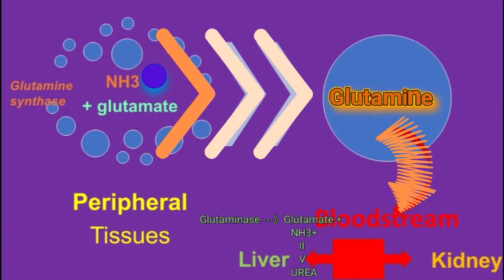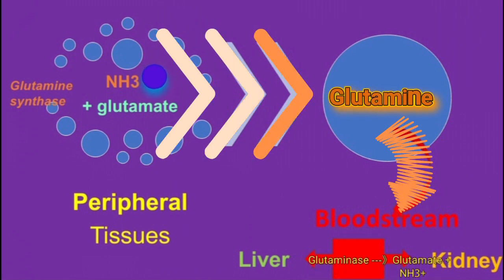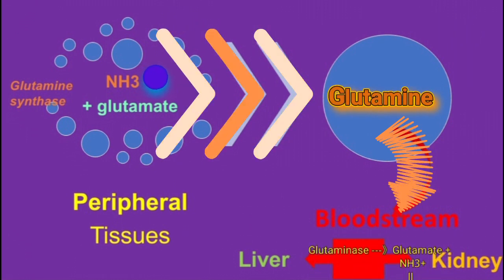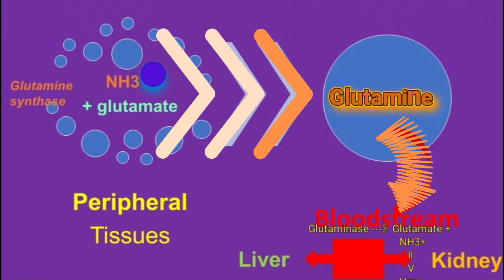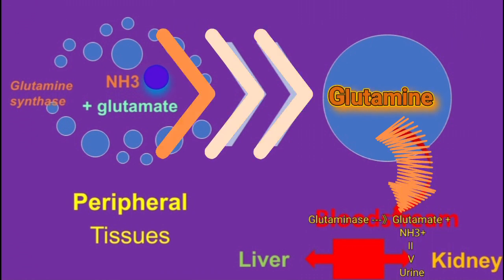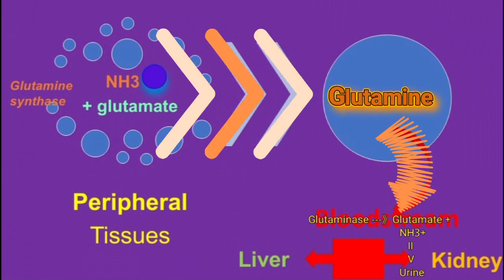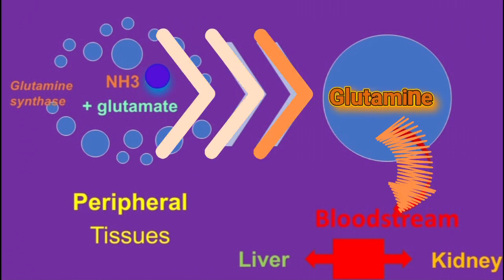In the kidney, glutaminase will also metabolize glutamine into glutamate and ammonia. However, in the kidney the ammonia can be released in the urine and easily disposed of that way.